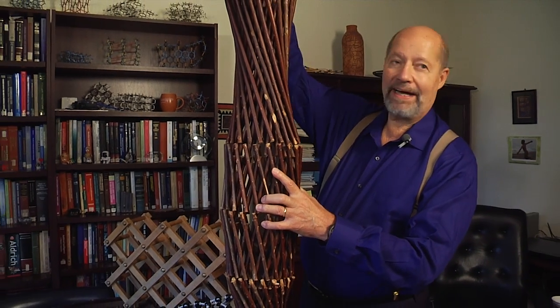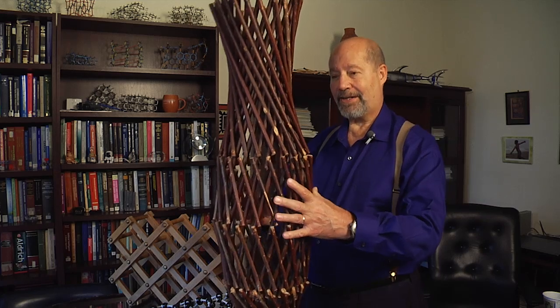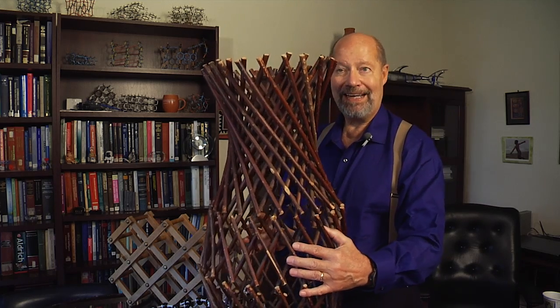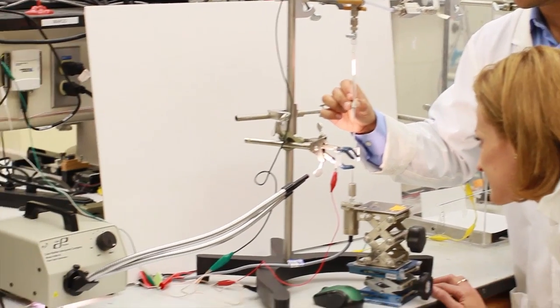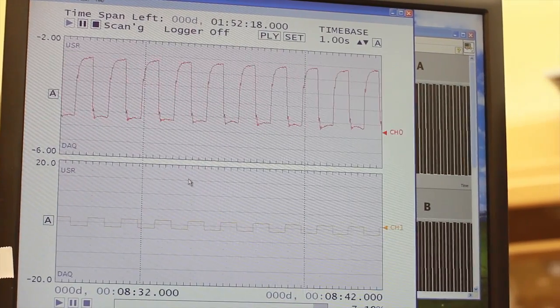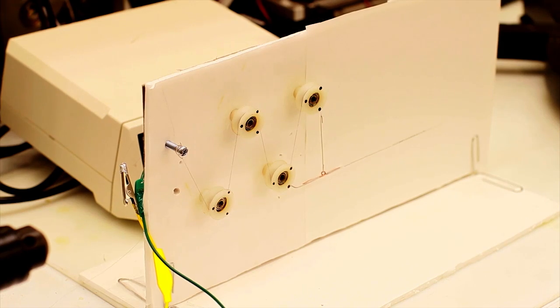When the wax inside our yarns expands, it causes the yarn to contract. And this contraction can be giant. This contraction is one type of actuation we use for our muscles.